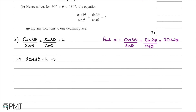We have 2/tan(2θ) = 4. Multiplying both sides by tan(2θ) gives 2 = 4tan(2θ). Dividing both sides by 4 gives tan(2θ) = 2/4 = ½.